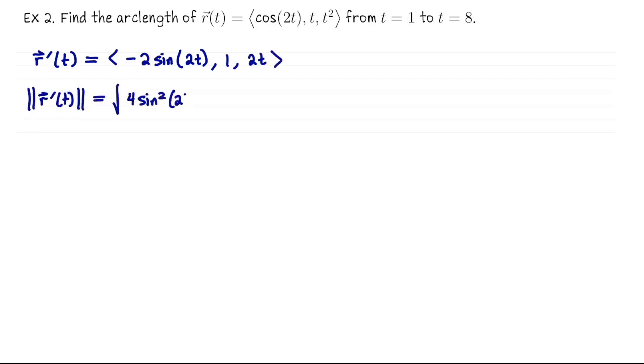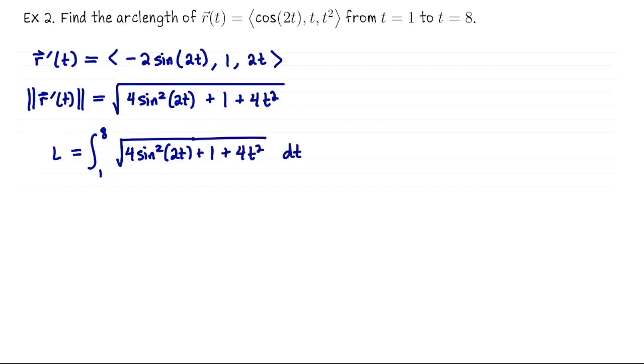So r prime of t is negative 2 sine 2t, 1 2t. So the speed is the length of r prime, and that tells us that the length from 1 to 8 is going to be the integral from 1 to 8 of this square root, so the square root of 4 sine squared 2t plus 1 plus 4t squared. We can't integrate that by hand, but I can do it numerically. So using Wolfram, I got an arc length of about 64.4.